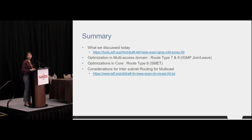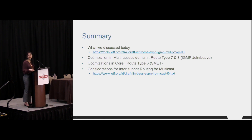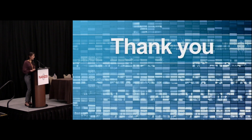We'll close with reference material. The first URL describes these optimizations: route type six, seven, and eight. The SMET route for core optimizations, and route types seven and eight as reflections of IGMP join and leave to optimize the multi-access segment. For further reading, see the optimized inter-subnet multicast routing draft. Thank you for joining, and we'll open it up for questions.